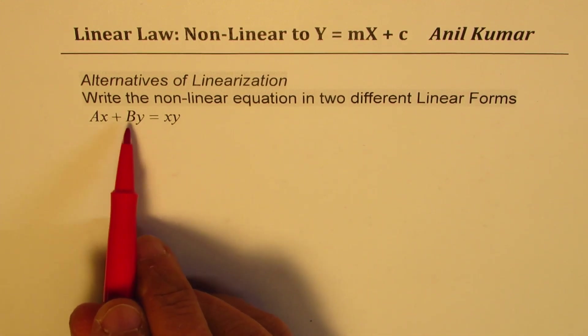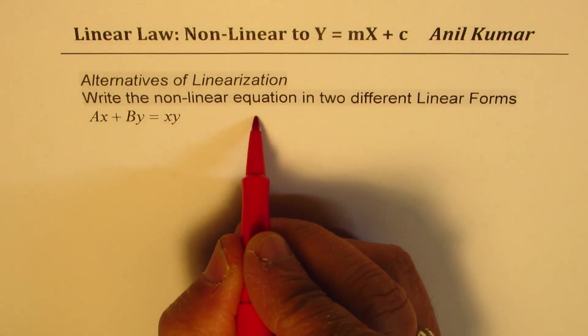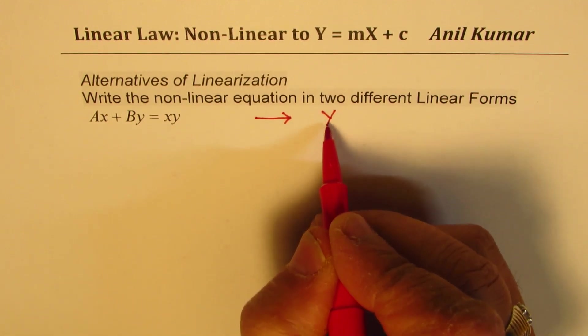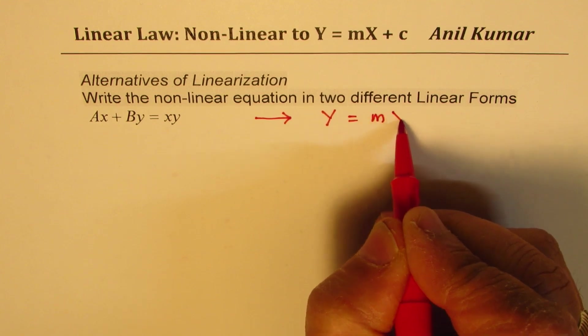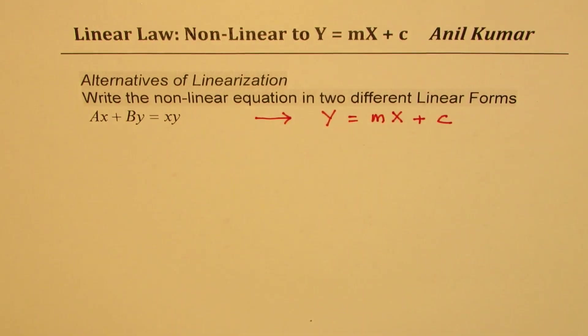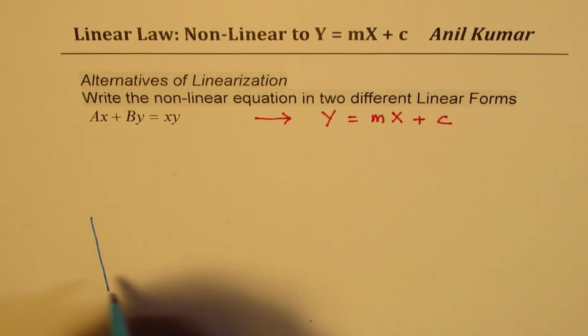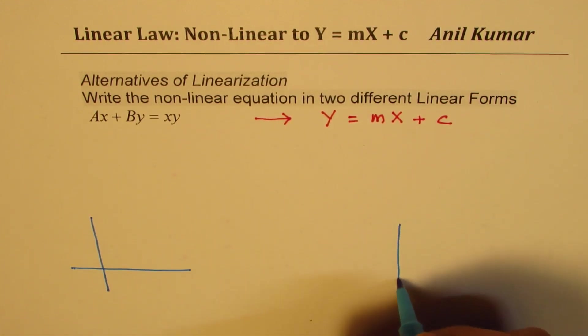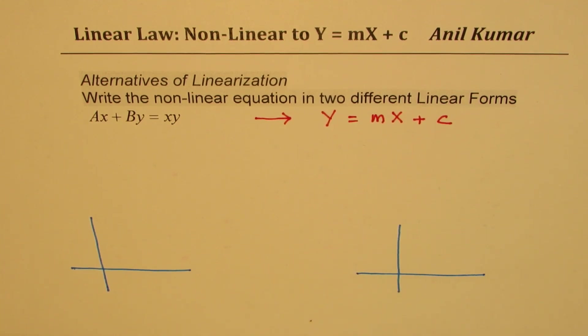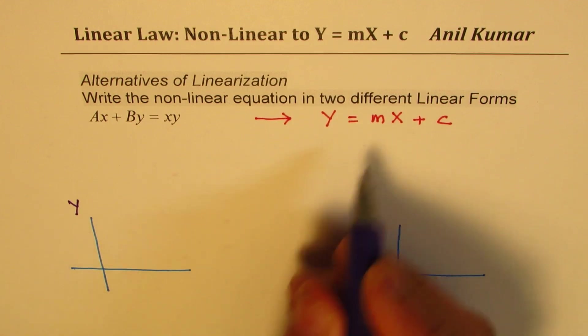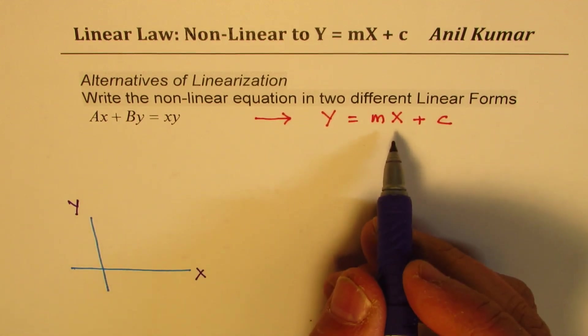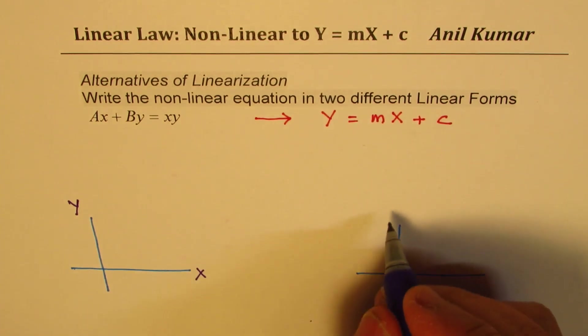So we have this equation AX plus BY equals XY. The idea here is to convert this to the form capital Y equals MX plus C. Once we do it, we could actually plot it on a graph. So the idea is to get a linear graph. We'll make two different forms and we'll make two different graphs.